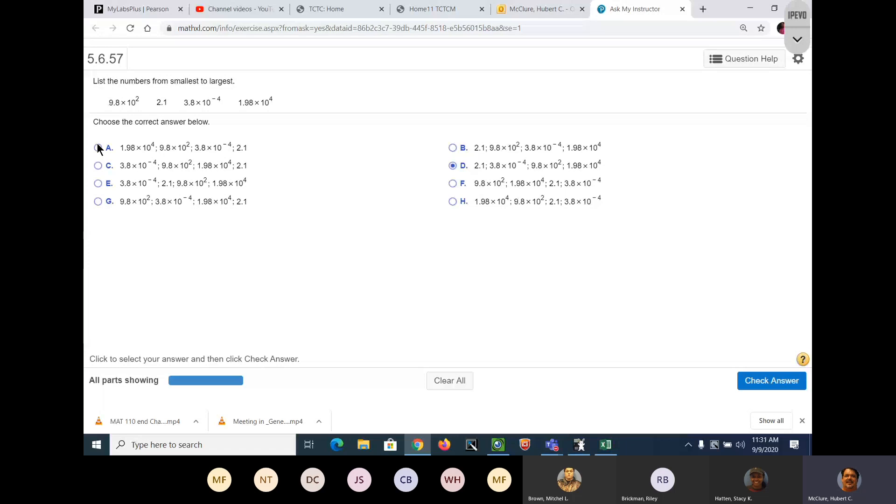9.8 times 10 to the 2, 2.1, 3.8 times 10 to the negative 4, and 1.98 times 10 to the fourth. I'm going to write all these like regular numbers. So 10 to the 2 is 980. 2.1, 3.8 - I'm gonna put a 3, 8 there and go one, two, three, four. And I'm gonna put a 1, 9, 8 here and that's gonna be one, two, three, four.